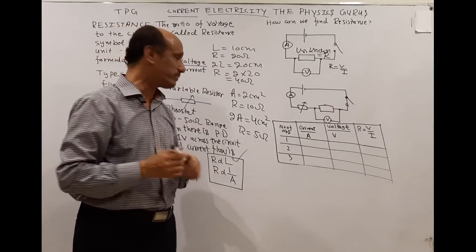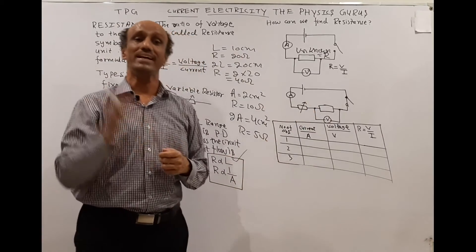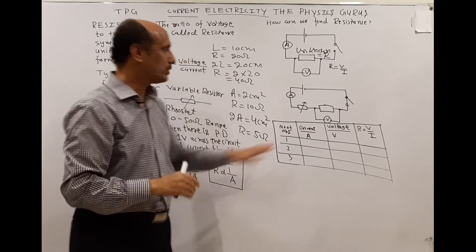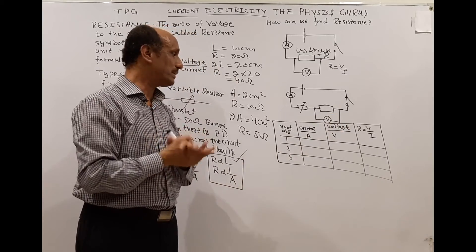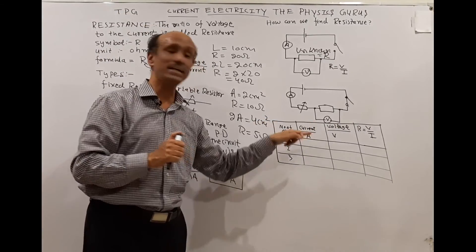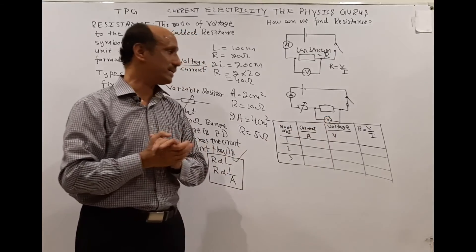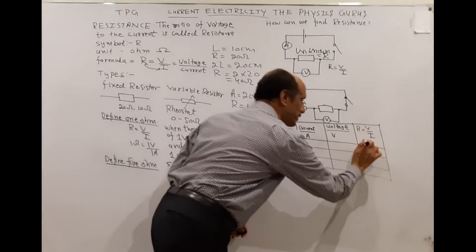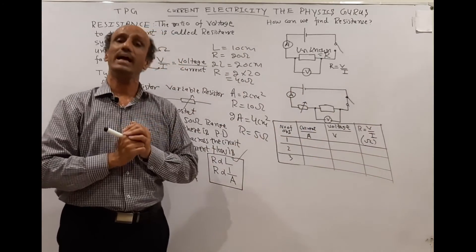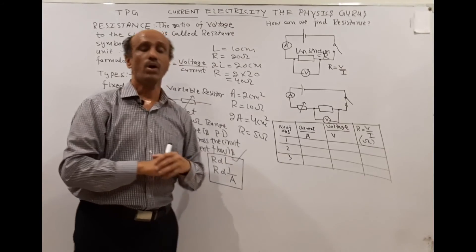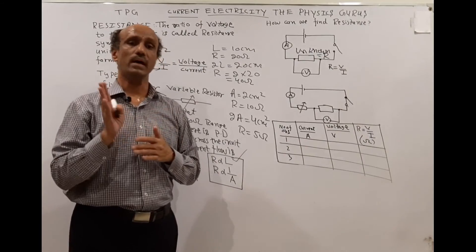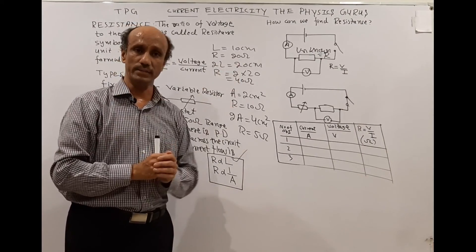Close the switch at the highest resistance setting to get the first set of voltage and current values. Then decrease the variable resistor from maximum to minimum at regular intervals to collect more data. Record the data in a table with columns for current (with unit ampere), voltage (with unit volt), and R = V/I (with unit ohm). Finally, find the average of the resistance values or plot a graph to determine the resistance accurately.